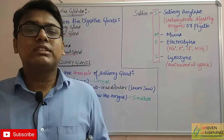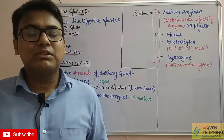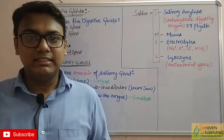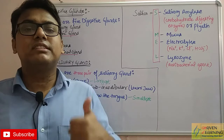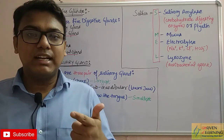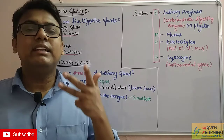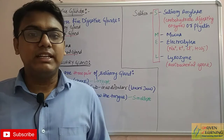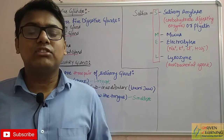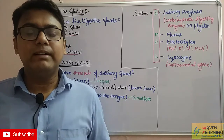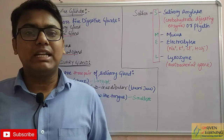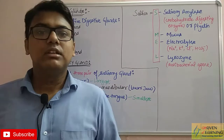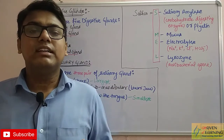All those glands which come under the digestive system are called digestive glands. They are five in number: first is salivary gland, second is gastric gland, then liver, pancreas, and intestinal glands. In this video we will focus on salivary gland, liver, and pancreas.